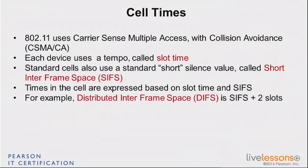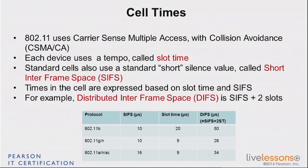In a normal communication, after somebody has sent, the next person to send is going to wait a time called the DIFS — distributed interframe space. DIFS is basically one SIFS plus two slot times. Every timing calculation in the cell is going to be derived from a combination of SIFS and slot times. Those values change depending on the protocol — what matters primarily is what happens in G, A, and AC. The SIFS is slightly different between them, but the slot time is the same. Knowing these numbers is useful because different stations with different protocols implement a different view of the cell timing.